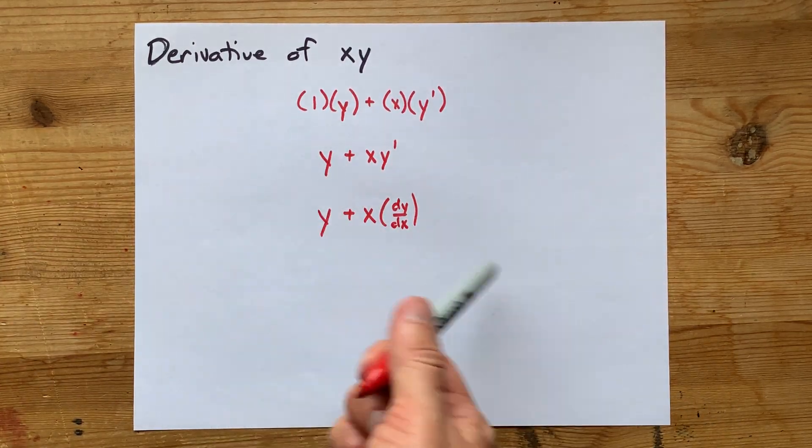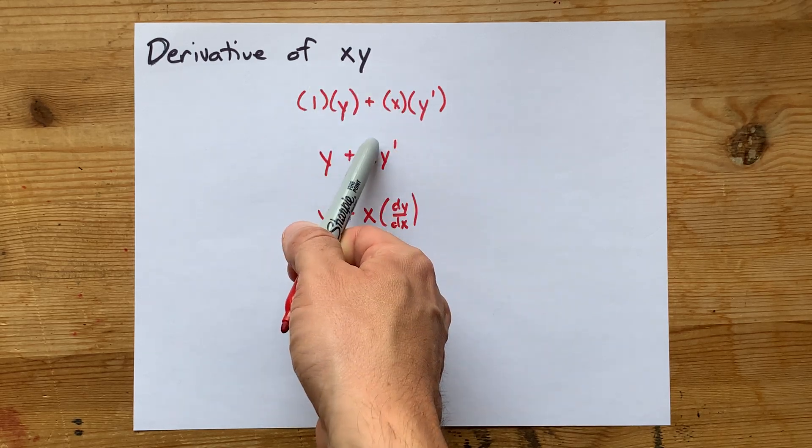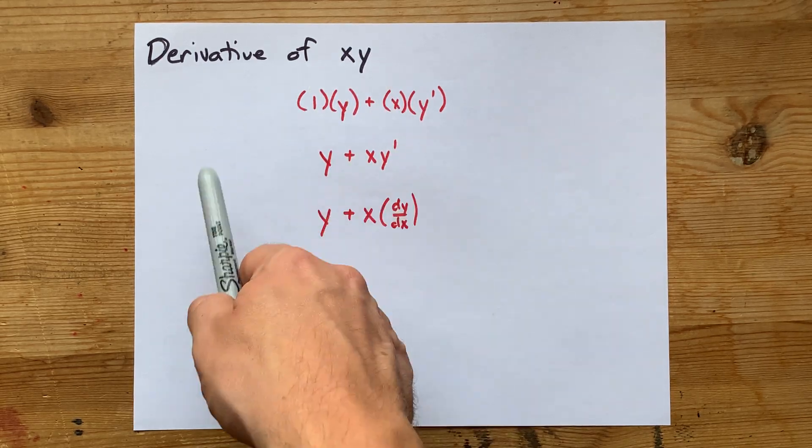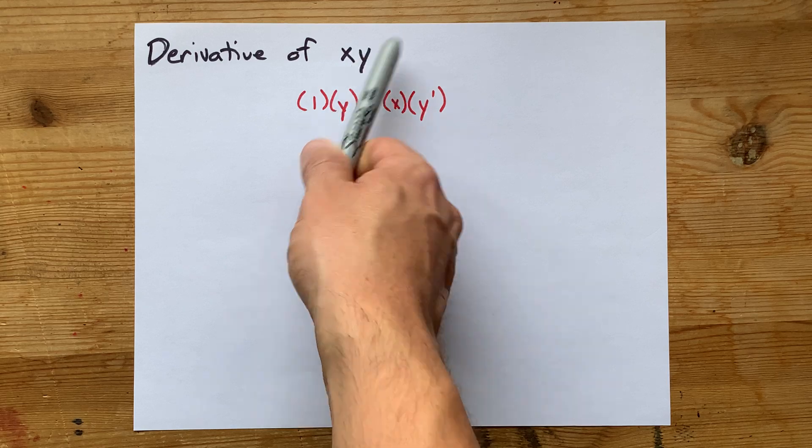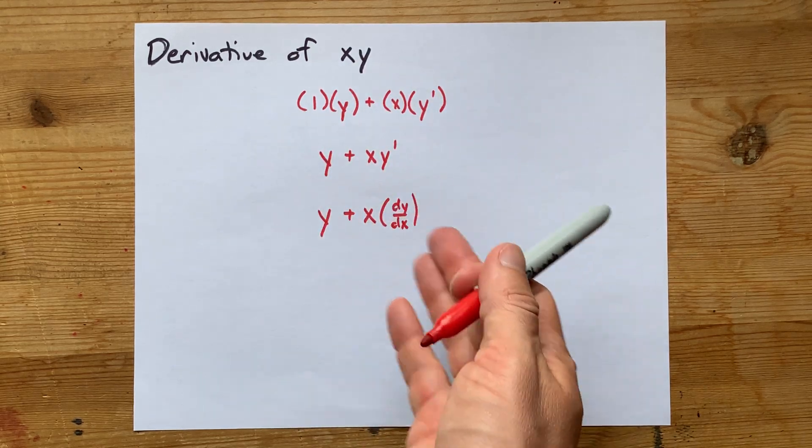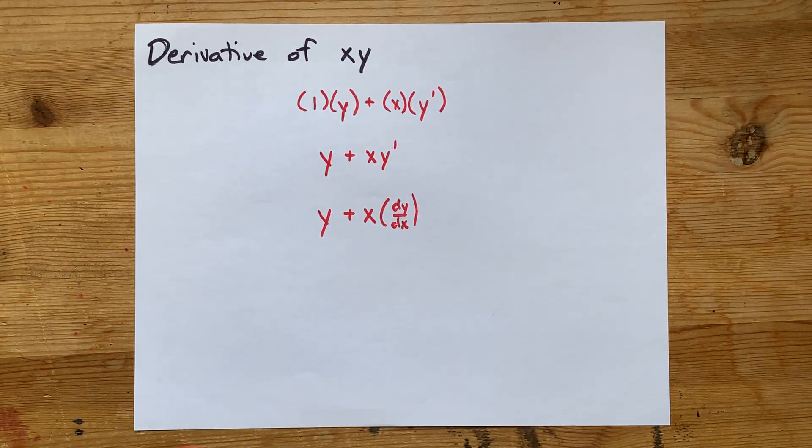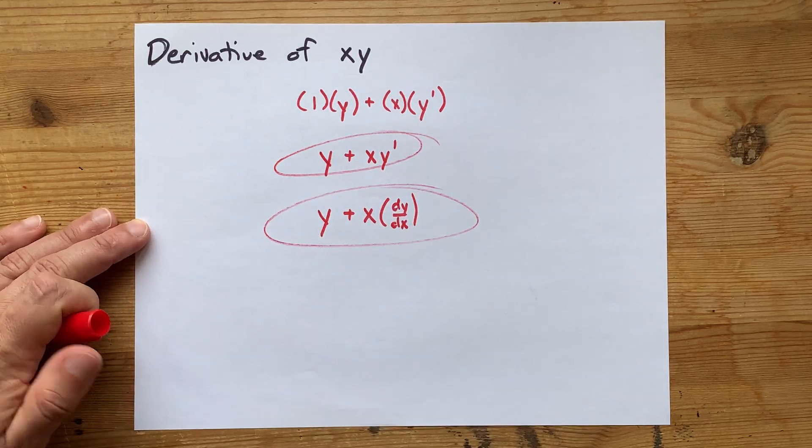That's it for the derivative of xy. You needed the product rule to do it, and you needed to know that the derivative of y is simply written as y prime or dy/dx. So this is your solution.